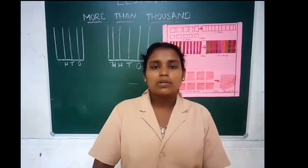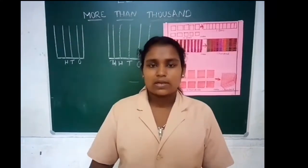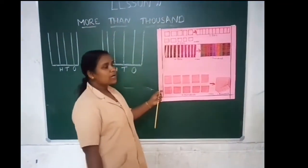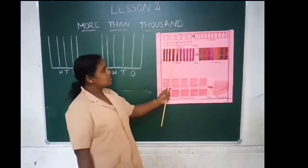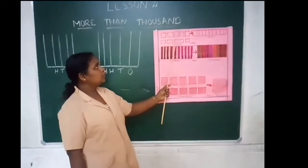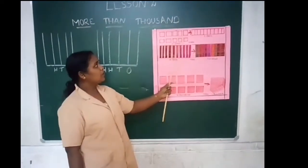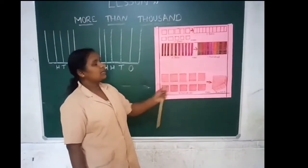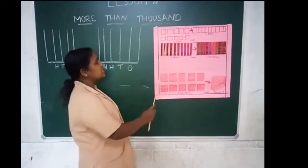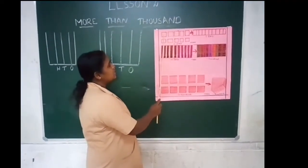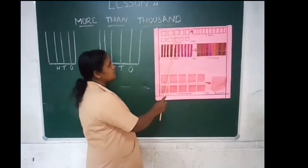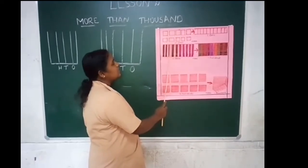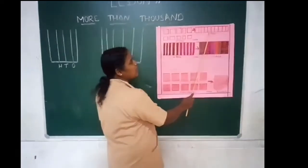Next, second chapter: more than thousand. You can see ten boxes here — one, two, three, four, five, six, seven, eight, nine, ten boxes. That is ten ones. Each box represents ones, so ten ones. Ten ones equals one ten.